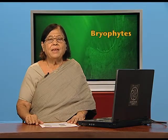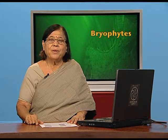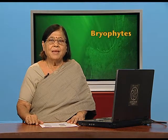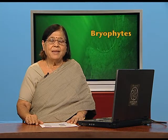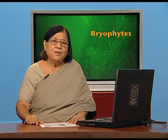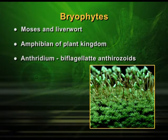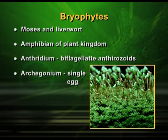The way reproduction takes place in bryophytes is slightly complicated, and we need to interlink certain information to understand it. Let us start from the beginning. The male reproductive part is called antheridium and it will produce antherozoids. The female sex organ is called archegonium and it will produce one single egg.